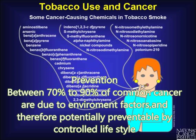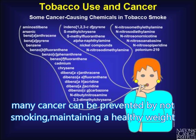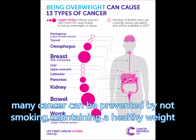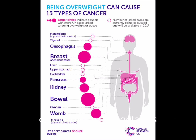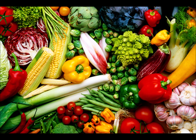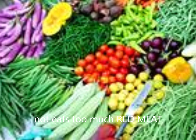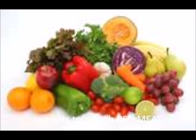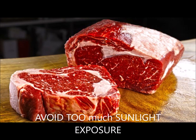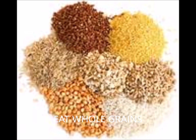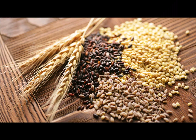Prevention: within 70% to 90% of common cancers are due to environmental factors, and therefore are potentially preventable by controlled lifestyle. Many cancers can be prevented by not smoking, maintaining a healthy weight, not drinking too much alcohol, and eating plenty of vegetables, fruits, and whole grains. You should avoid excessive eating of red meat and too much sunlight, as these can cause cancer. Always try to eat whole grains and fresh food.